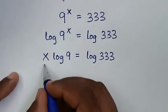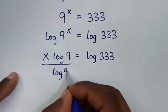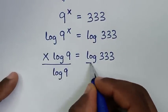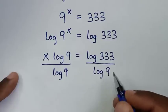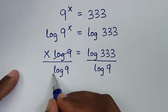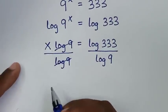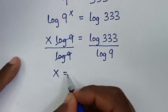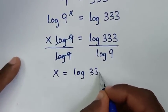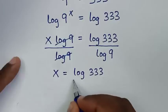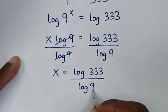Then we'll divide by log of 9 on both sides. So log of 9 will cancel log of 9, and it will be x is equal to log of 333 over log of 9.